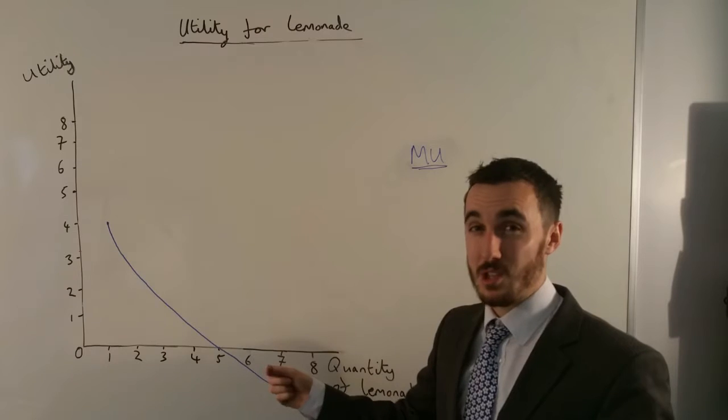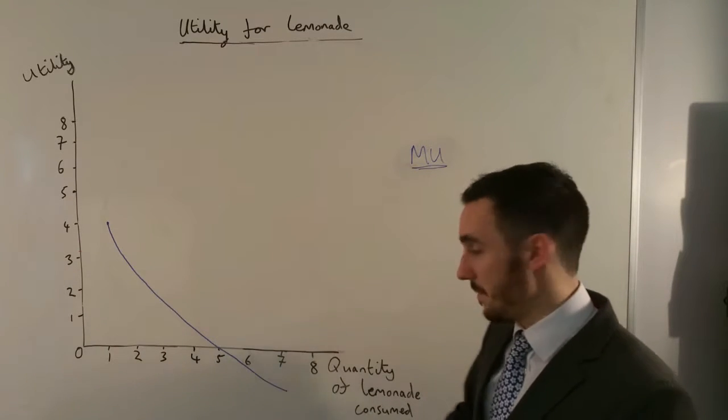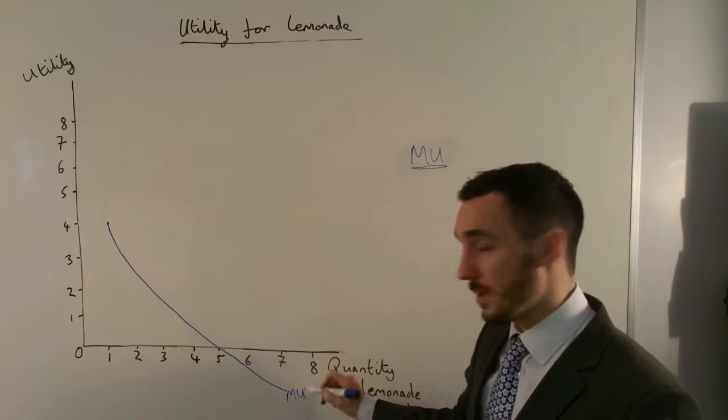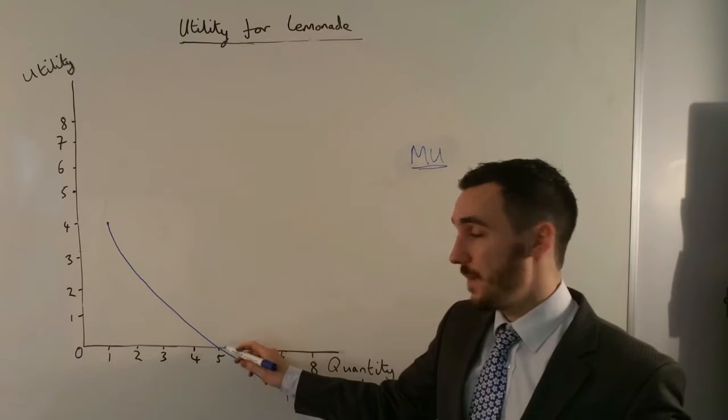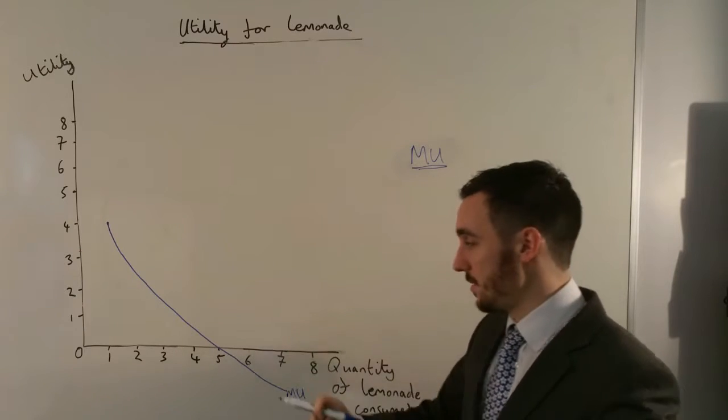So my utility is diminishing, my marginal utility of each glass is diminishing each time, to the point where on my fifth glass, anything more than that I'm actually going to be getting minus utility.